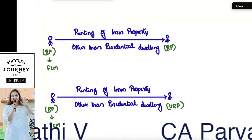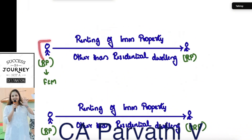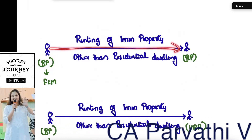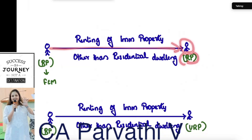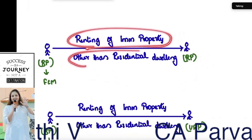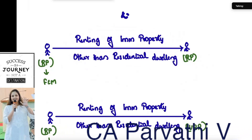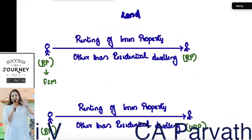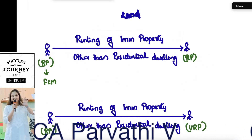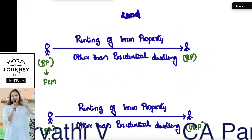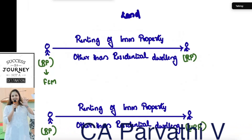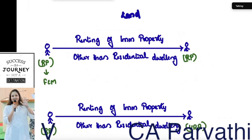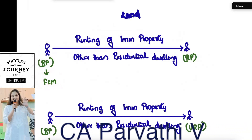Let's learn this with the help of an example. Suppose a supplier has a land and he is a registered person, and he has rented out that land to another person who is also a registered person. So is this renting of immovable property other than residential dwelling? Yes, it is land. RCM will come only when the supplier is an unregistered person and the recipient is a registered person. Here the supplier is a registered person, so this is not under RCM. In this case, forward charge mechanism is applicable.